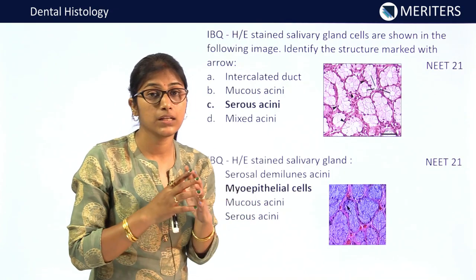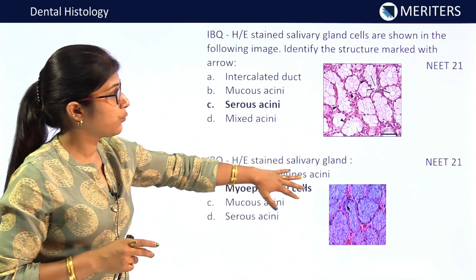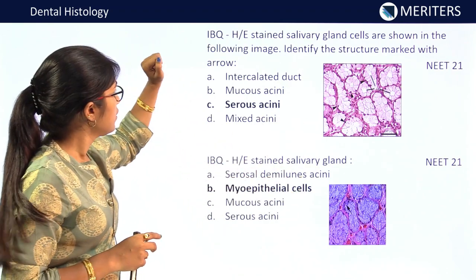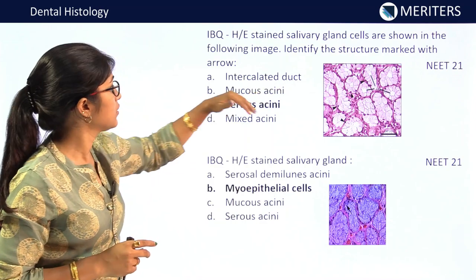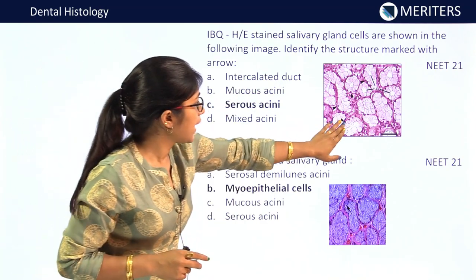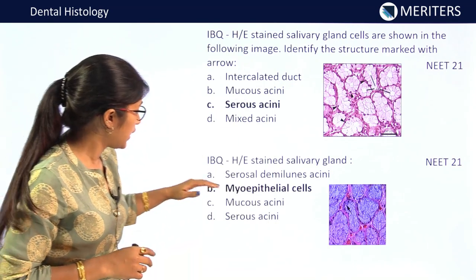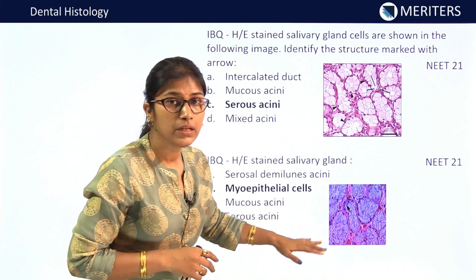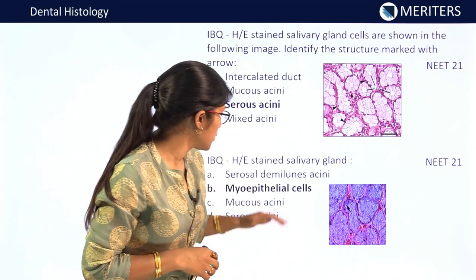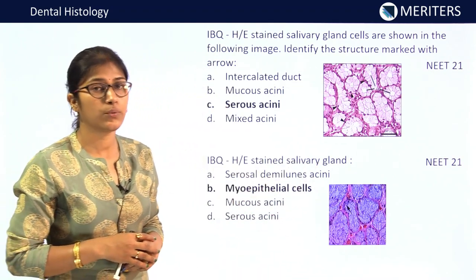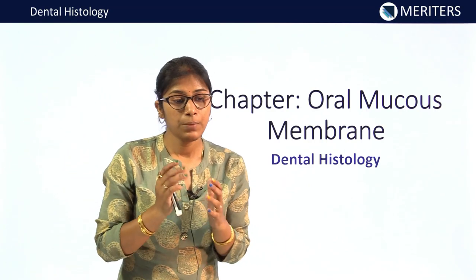In recent NEET 2021, two image-based questions were asked from salivary glands. In the first IBQ, an H&E stained salivary gland image was shown and the marked structure to identify was serous acini. In the second IBQ from the same exam, the marked structure to identify in the H&E stained salivary gland was a myoepithelial cell.